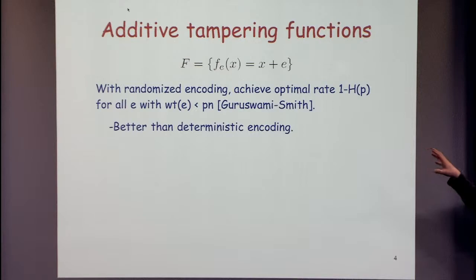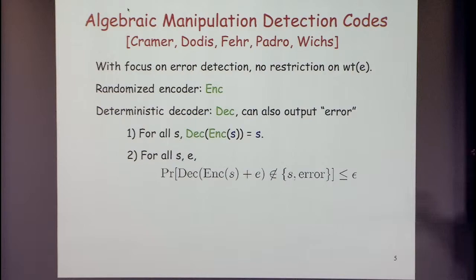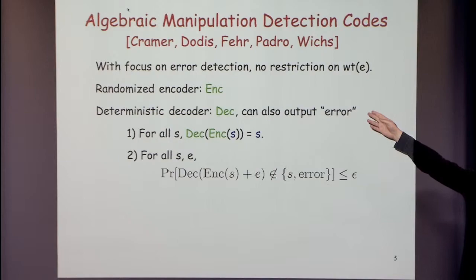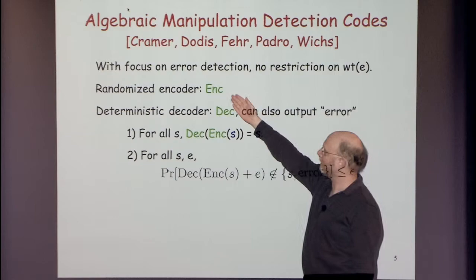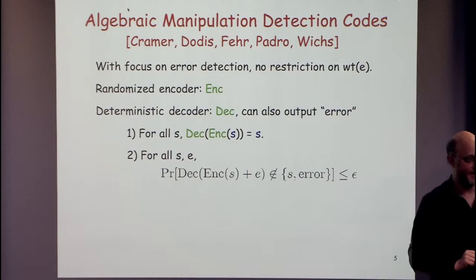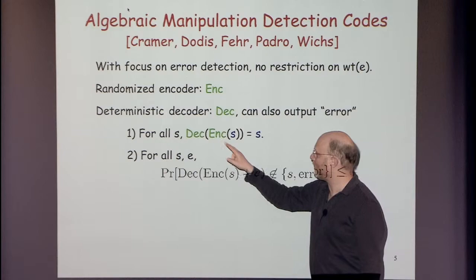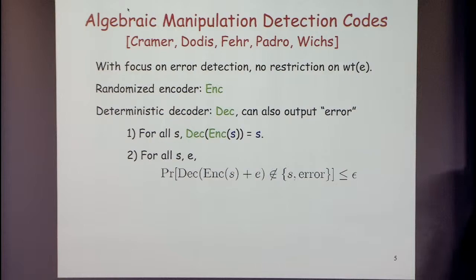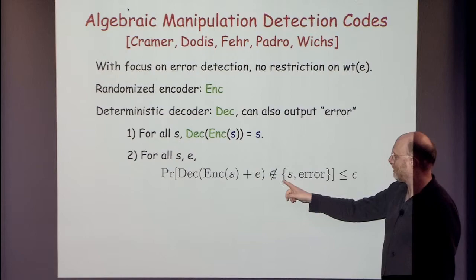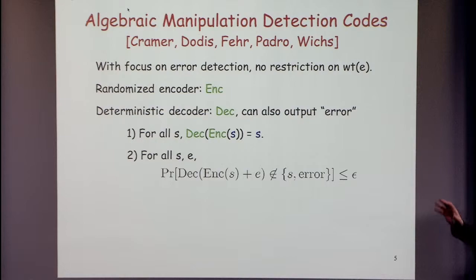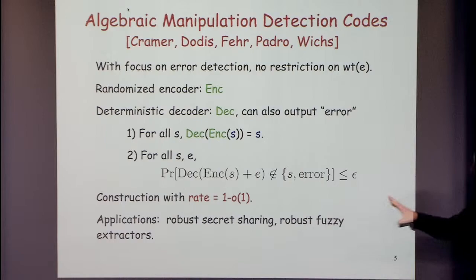We're not going to focus on error correction — we're going to focus on error detection. Focusing on error detection, several authors defined algebraic manipulation detection codes. Surprisingly, you don't need any restriction on the weight of e. We have a randomized encoder and a deterministic decoder that can also output 'error'. The decoder should either invert the encoder or output 'error' with probability at least 1 minus epsilon. They show you can achieve rate approaching 1, and there are cryptographic applications.